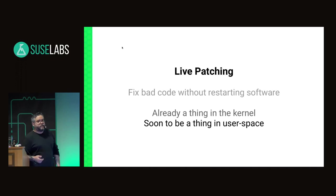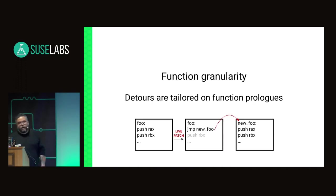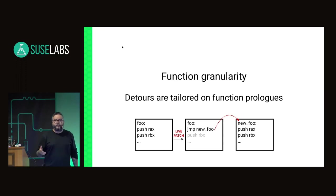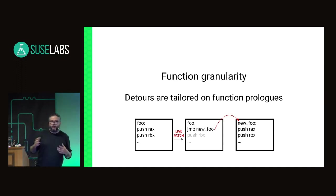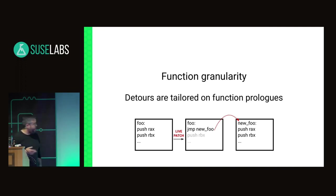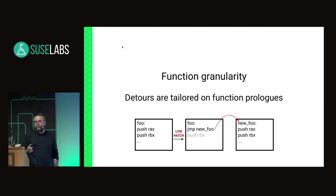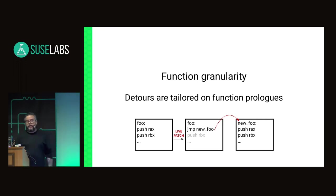It's soon to be a thing in user space. Live patching has a function granularity — when you're patching code, you're basically replacing bad functions with fixed functions. The way it normally happens, you put detours in the prolog of functions to replace them. For example, with a foo function that is a bad function, you eventually live patch it by putting a jump instruction at the beginning of foo to jump into its new version. So whenever foo is called, it will actually jump into its new version and you'll have fixed code running.